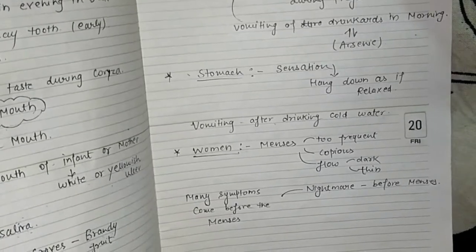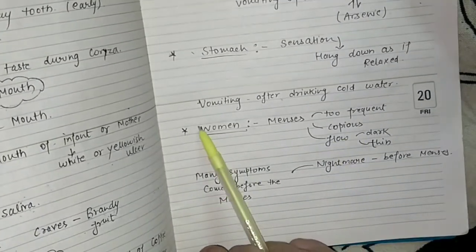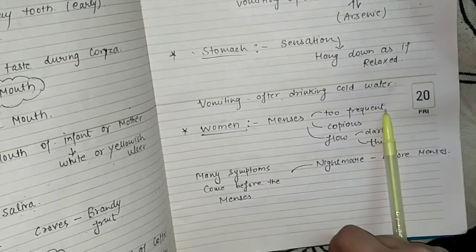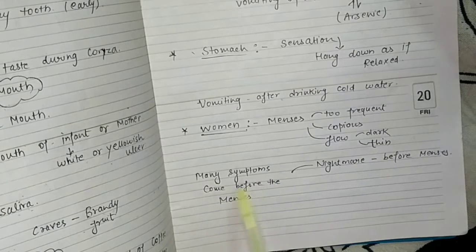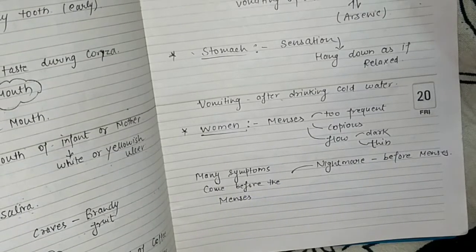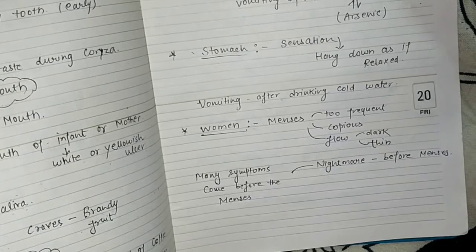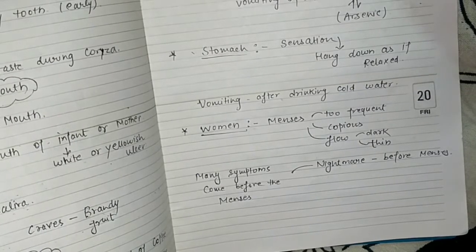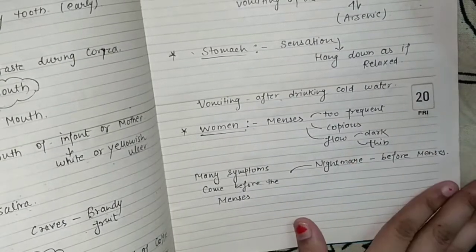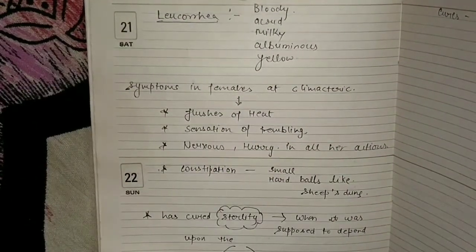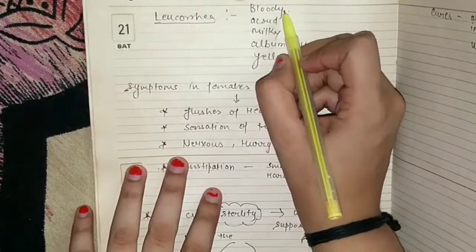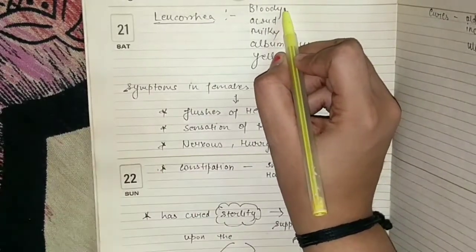For women: menses are too frequent and copious; flow is dark and thin. Many symptoms come before the menses, such as nightmares — think about Sulfuric Acid. Leucorrhea: bloody, acrid, milky, albuminous, yellow. Leucorrhea is very important in the female symptoms.